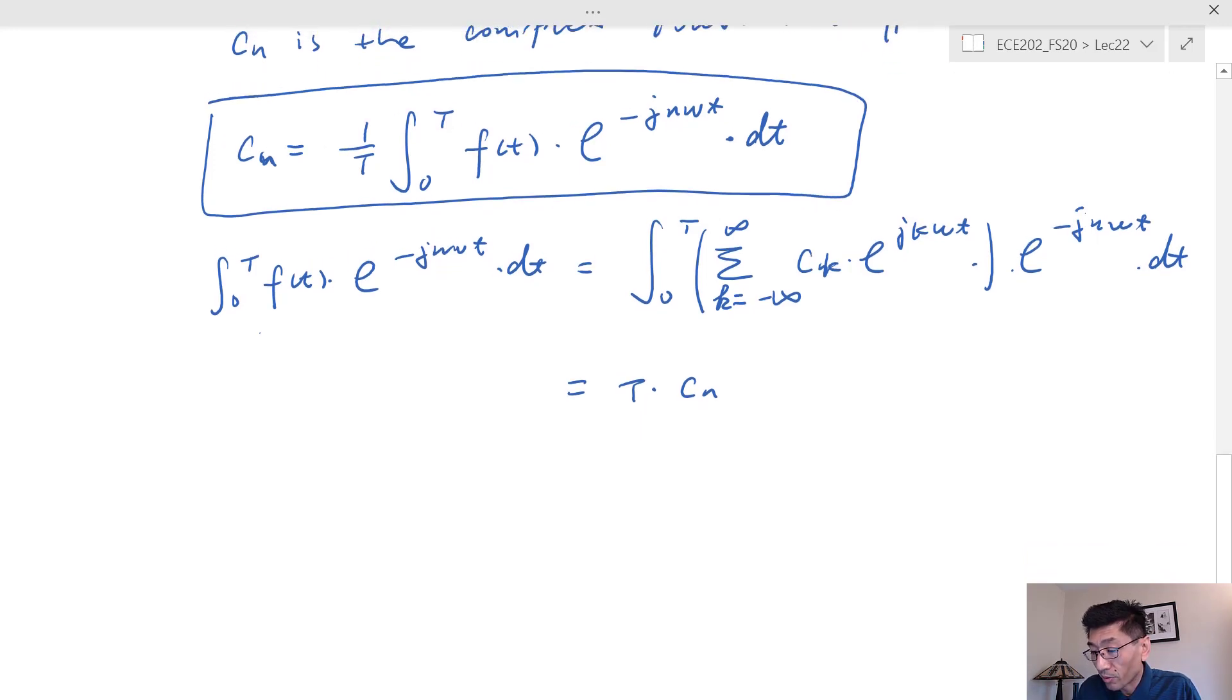So this is the complex form. We're going to look at an example of how we're going to solve for the complex Fourier coefficients.